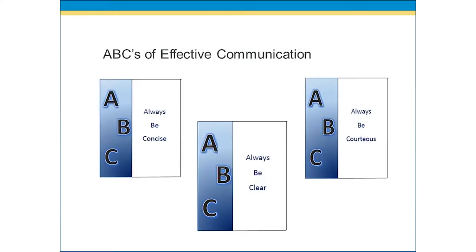There are some key rules to effective communication, and to make this simple, we're going to call it the ABCs of effective communication. The first is: always be concise. Don't say more than you need to. If you can keep your message to one topic or one point, this will allow you to be concise. Although your thinking process may move quickly from one topic to another, others you are speaking with or writing to may not follow your logical path, so try to be concise and keep your points to one message.